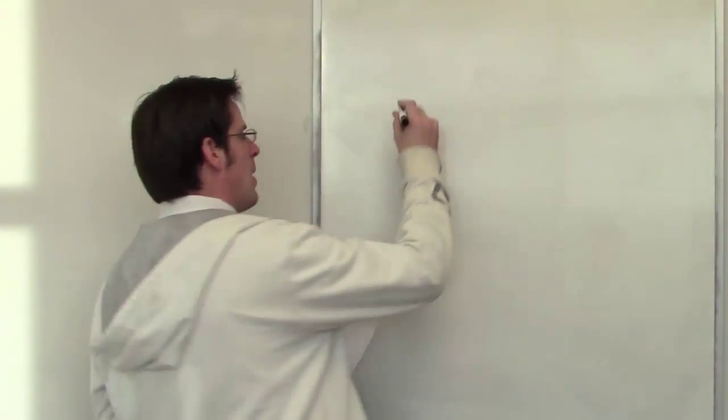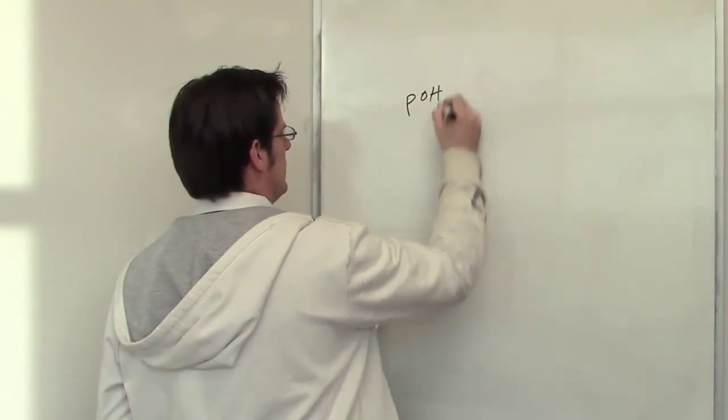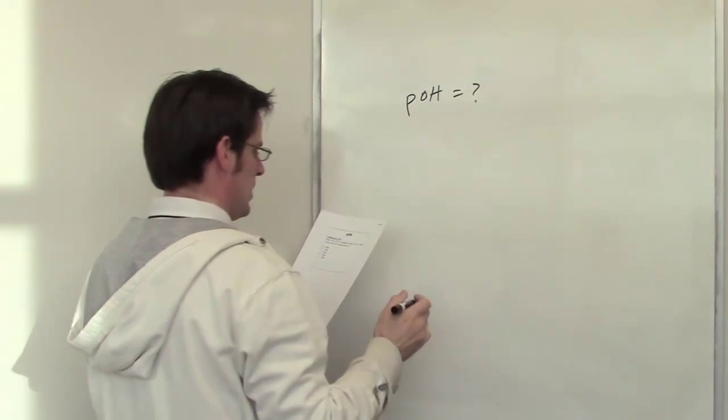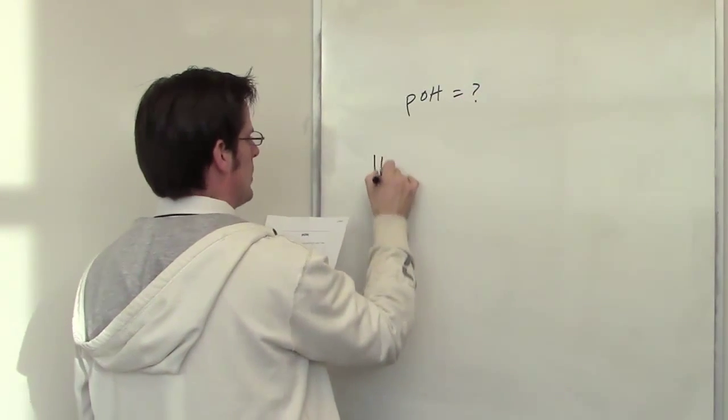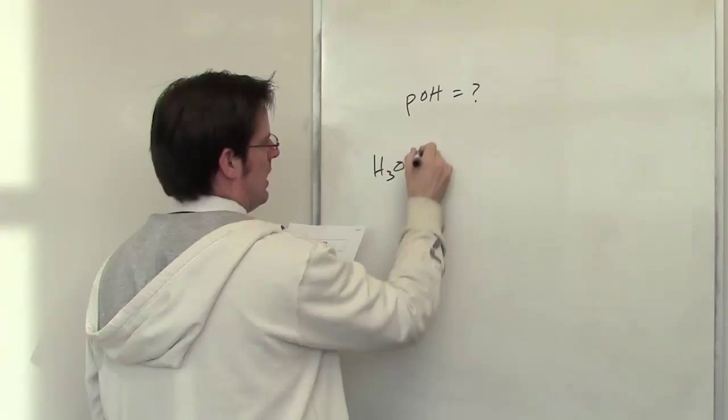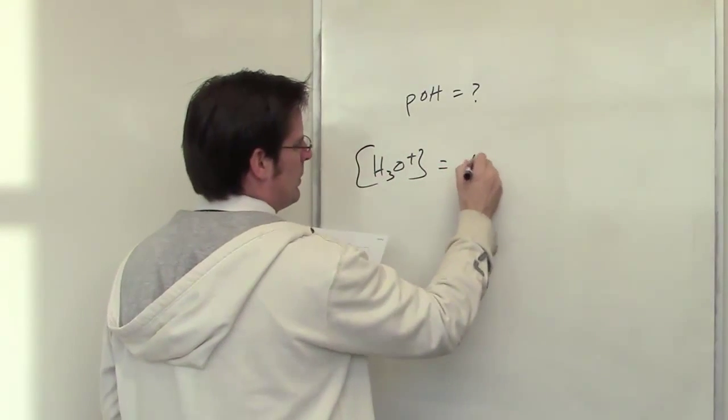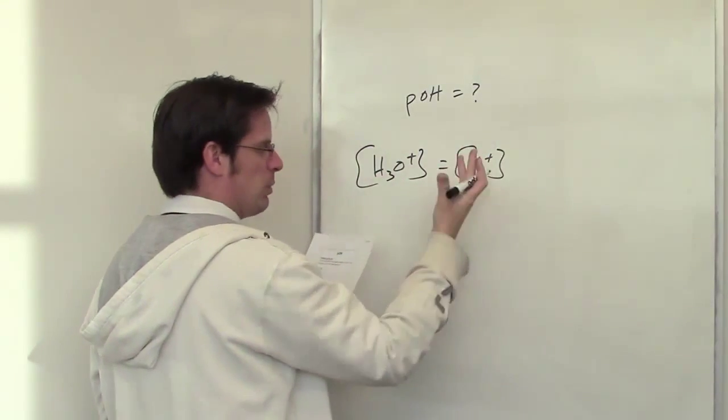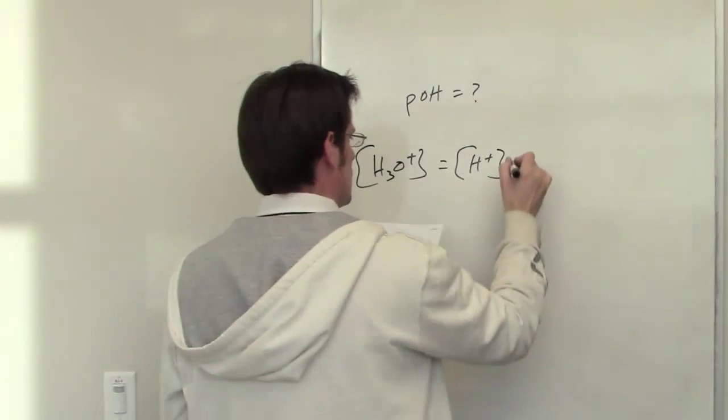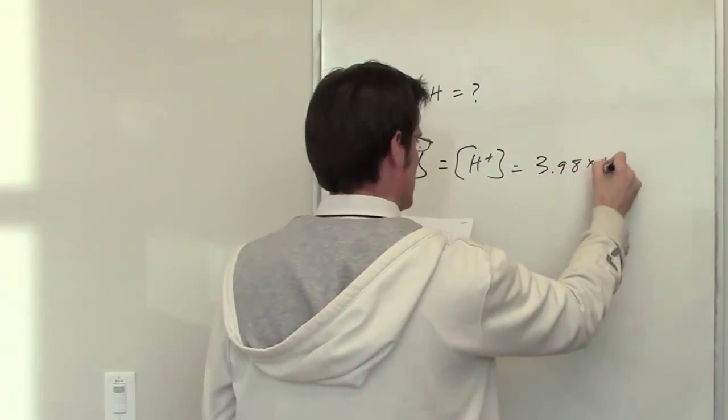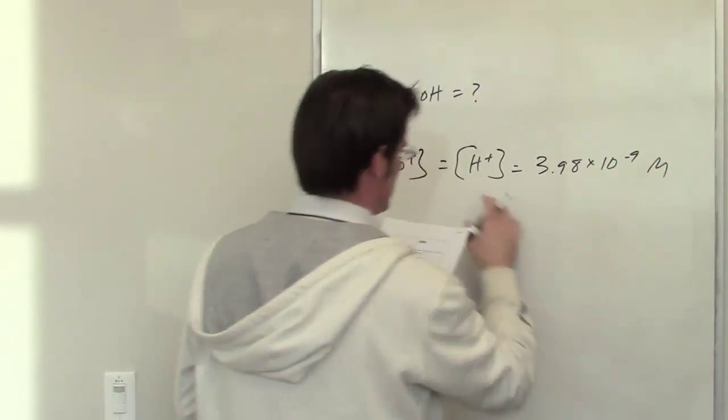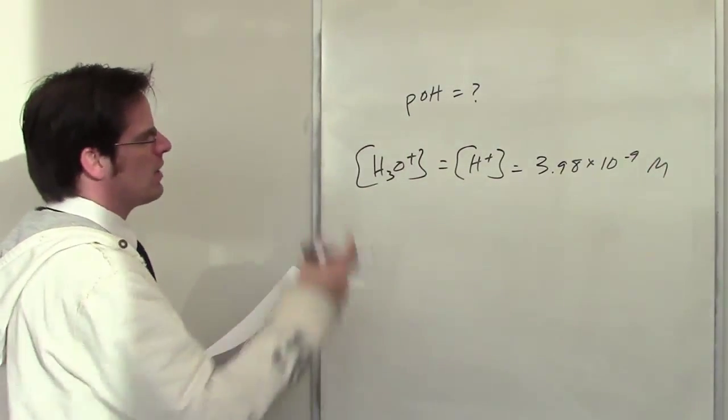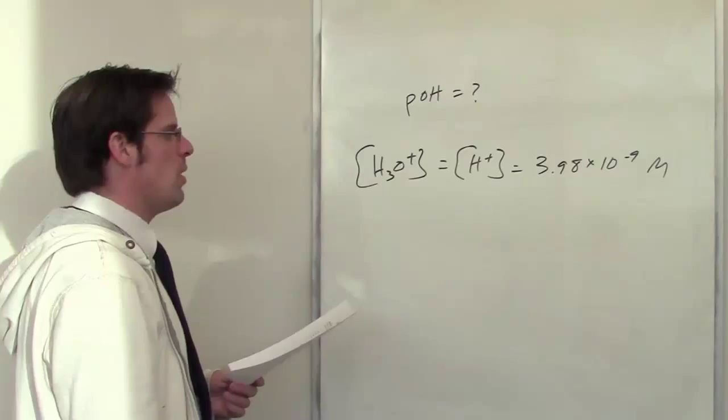This is a fun question. What is the pOH of a solution that has a concentration of hydronium? So my hydronium concentration, which once again, we lazy chemists sometimes just write as H plus concentration, is 3.98 times 10 to the negative 9th molar. That's the concentration of H plus. How do I get to pOH from that?